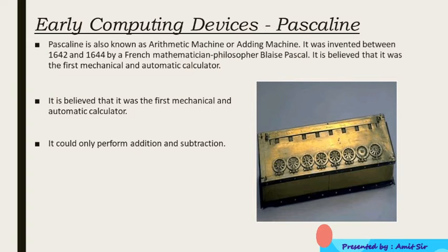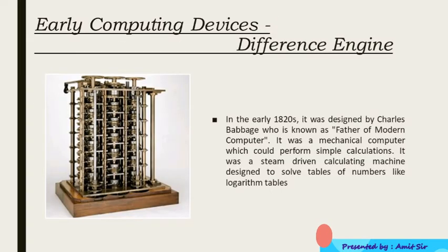The next one is the Difference Engine. In the early 1820s it was designed by Charles Babbage, who is also known as the father of the computer. It was a mechanical computer which could perform simple calculations. It was a steam-driven calculating machine designed to solve tables of numbers like logarithm tables in mathematics.